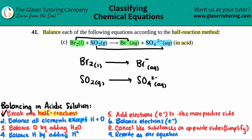Now we balance all elements except hydrogen and oxygen — so only bromine on the top reaction and sulfur on the bottom. On top, I have two bromines on the left but only one on the right, so I add a coefficient of 2. On the bottom, I have one sulfur on each side, so they're already balanced.